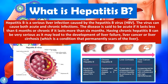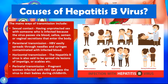The main ways of transmission include sexual contact — having unprotected sex with someone who is infected — because the virus passes via blood, saliva, semen, or vaginal secretions. We can also have parenteral transmission: the Hepatitis B virus easily spreads through needles and syringes contaminated with infected blood, making it a major concern in healthcare centers as well as tattoo parlors. Horizontal transmission occurs when the virus spreads via lesions of impetigo or scabies, dermatological conditions through which viral particles can infect another person.